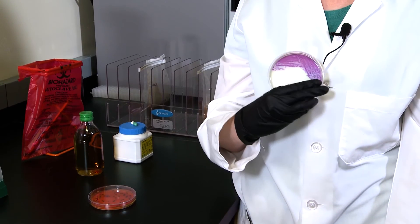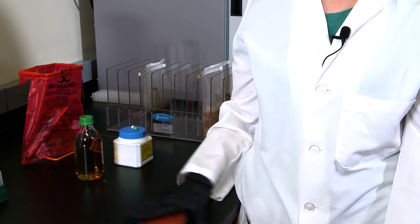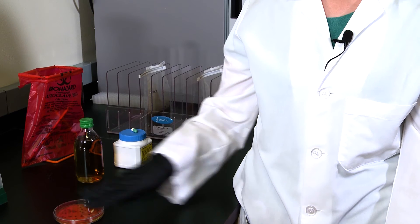So we can see typical salmonella colonies in magenta and here on the rapid L mono plate we can see the typical blue colonies of listeria monocytogenes. Bio-Rad's rapid chromogenic media are easy to read aren't they?